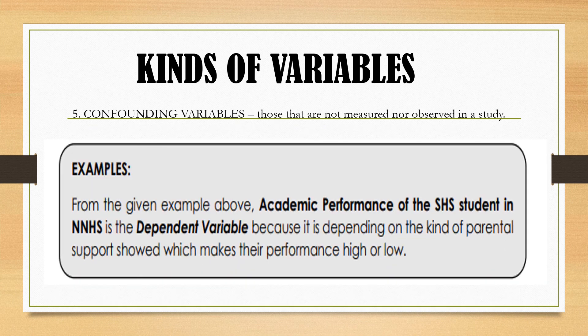Another one is confounding variable — those that are not measured nor observed in the study. These are variables that we did not measure or include in our study. From the given example, academic performance of the student is the dependent variable because it depends on the kind of parental support shown.